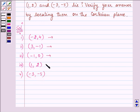Now for each point we need to tell in which quadrant or axis they belong to. Now (-2, 4)